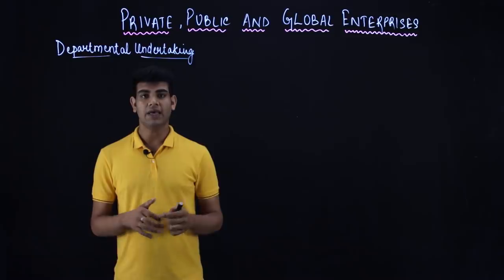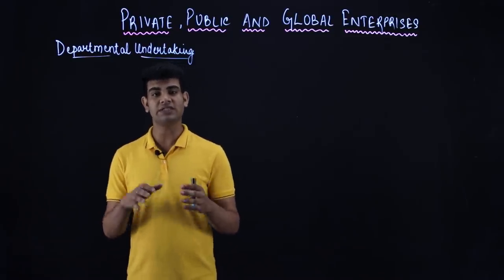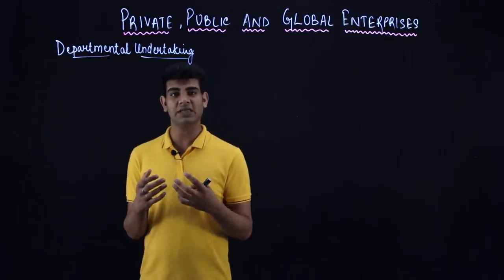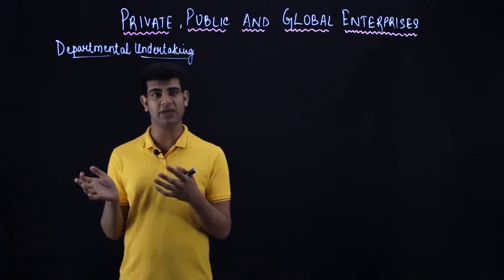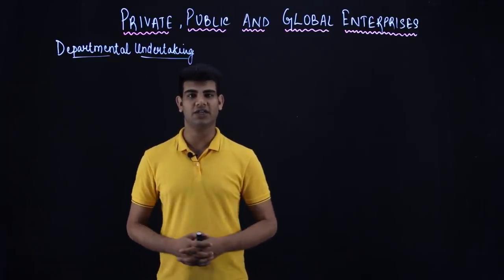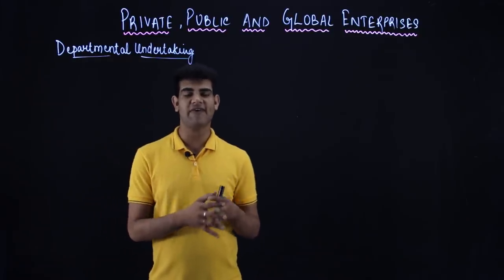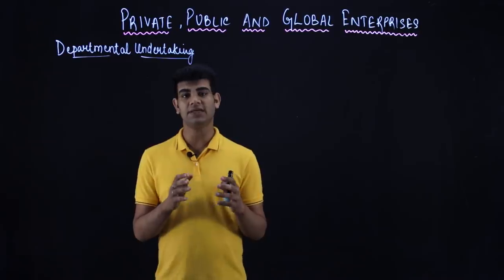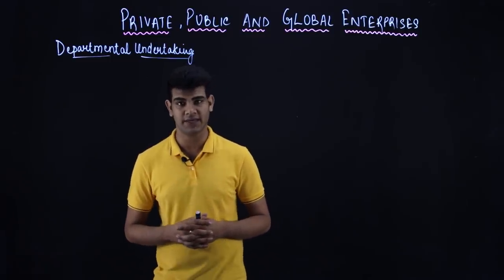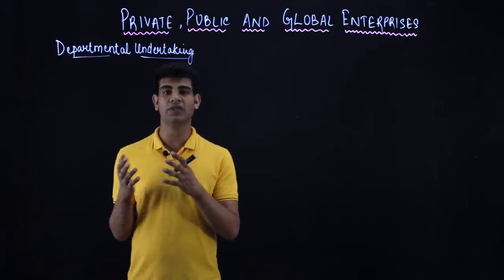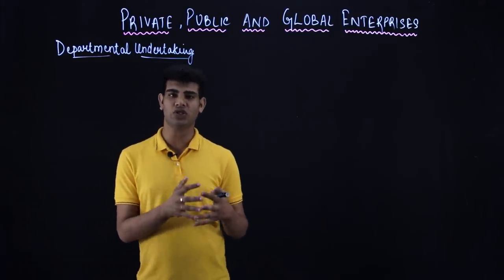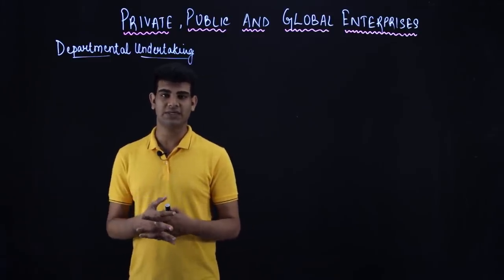Departmental undertakings are either owned by a state government or by the central government. Their financing — where they get their money from — comes either from the state budget or from the central government budget, where a part is allocated to these undertakings. Just as we can file a case against the government or sue the government, similarly we can sue a departmental undertaking if it has caused us any harm. For example, if you are using the railway to send goods and in transit the goods are misplaced or lost due to the railway, you can file a case against the railway and sue it for compensation.